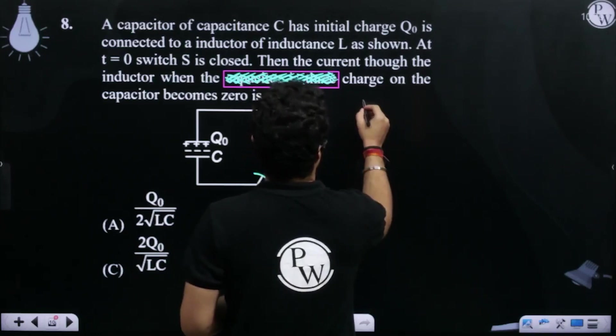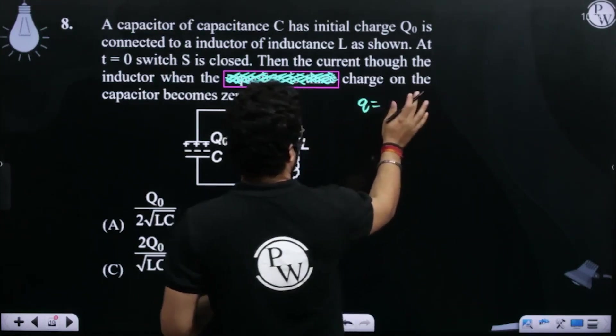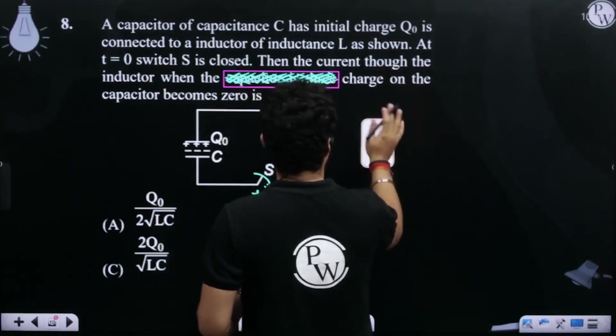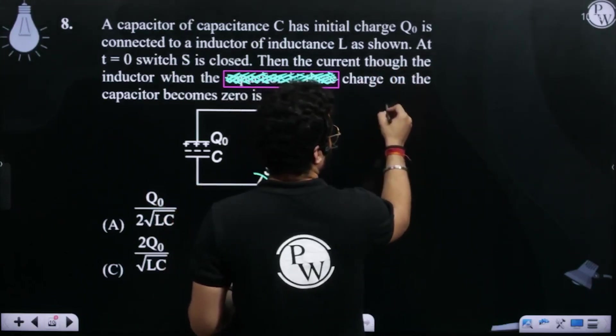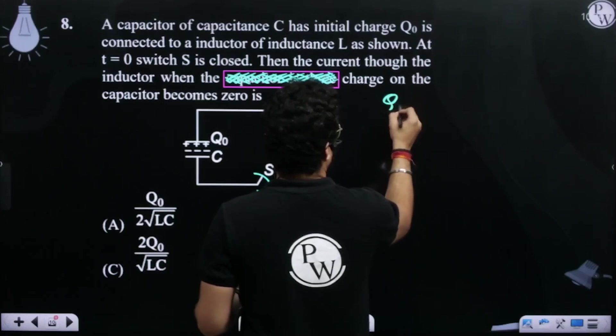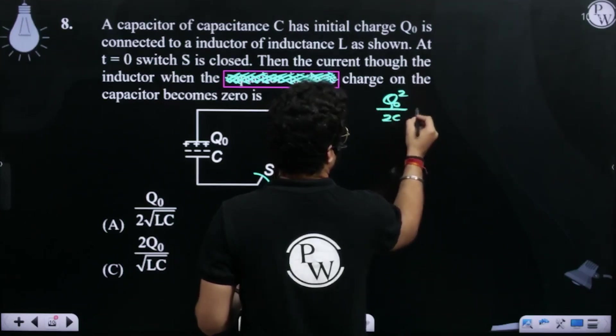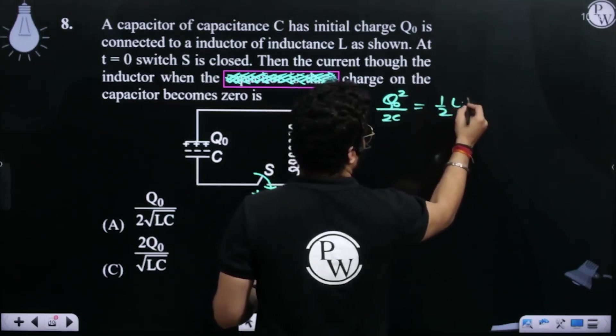So Q, the value is when the charge on the capacitor is 0 means that all the energy went in the inductor. Basically I can say that Q naught square by 2C is equal to half L...